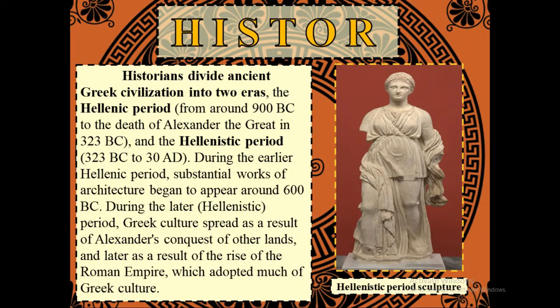Historians divide ancient Greek civilization into two eras: the Hellenic period and the Hellenistic period. During the earlier Hellenic period, substantial works of architecture began to appear around 600 BC. During the later period, Greek culture spread as a result of Alexander's conquest of other lands, and later as a result of the rise of the Roman Empire, which adopted much of Greek culture.